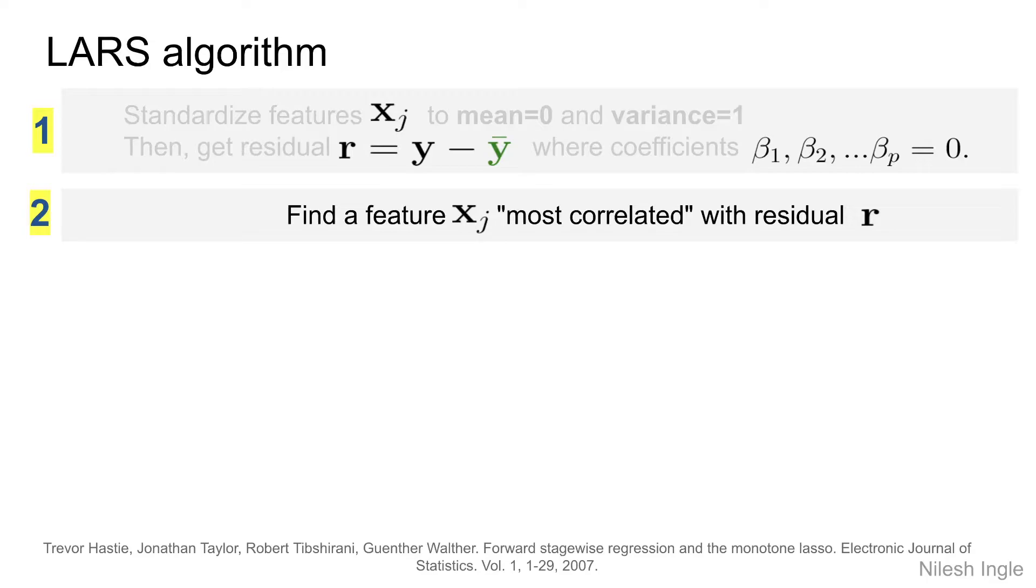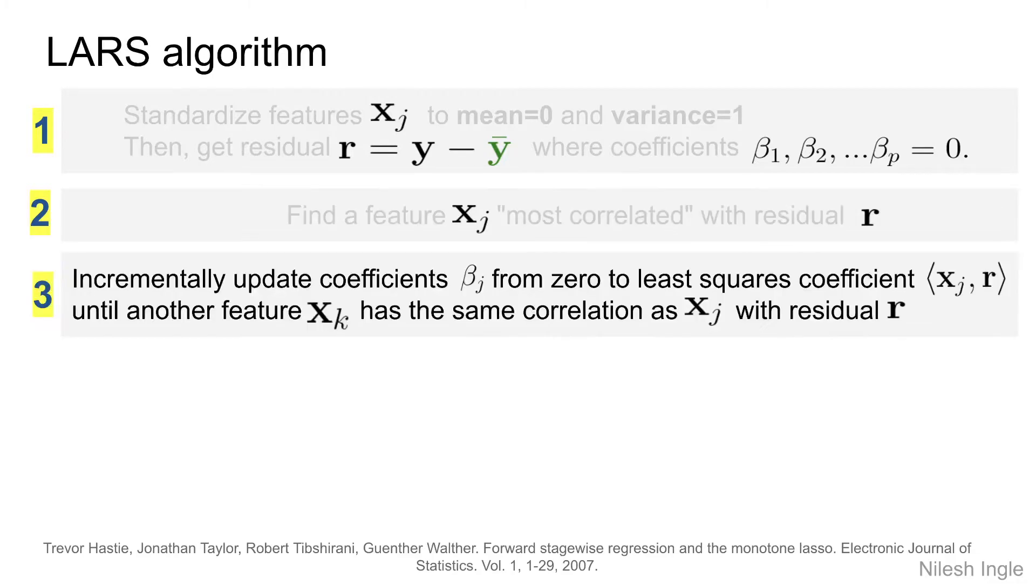Once we have that feature—here it is xj—then we want to update the value of the coefficient beta j for that particular coefficient xj towards least squares coefficient, and we want to move in that direction until we find another feature that has a similar correlation with the residual as xj had with r.